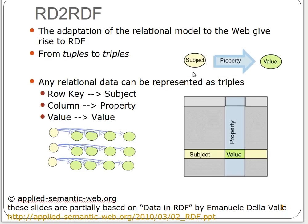Just to motivate this, I'll give you a simple example. Imagine normal relational data tables: we have columns and rows, and wherever a column meets a row we have a value. We can use that as the idea behind the triple. For a row we use that as a subject, for a column we use that as a property, and for the value we use that as our object. So instead of having multiple rows and columns, we can have every value in a triple: subject, property, value — which is exactly the idea behind triples.